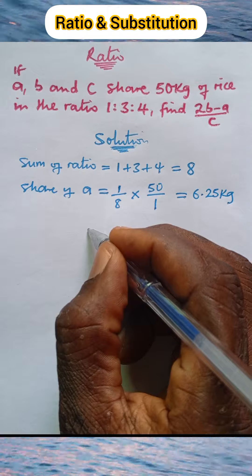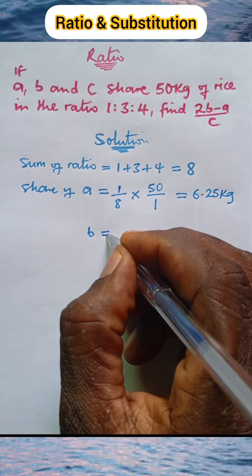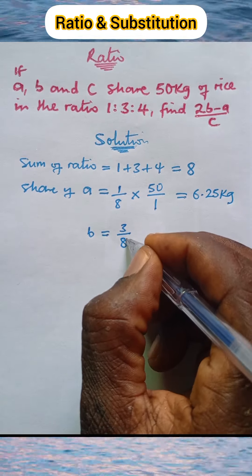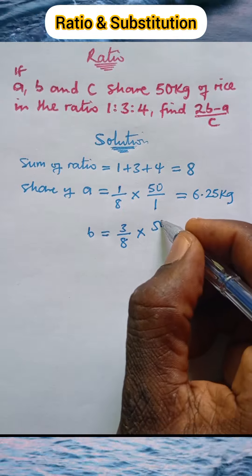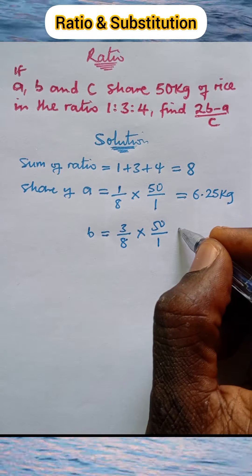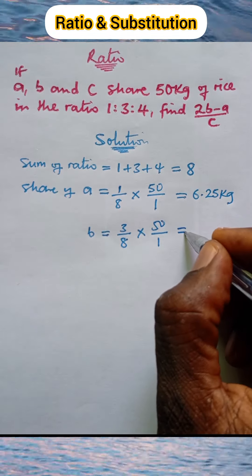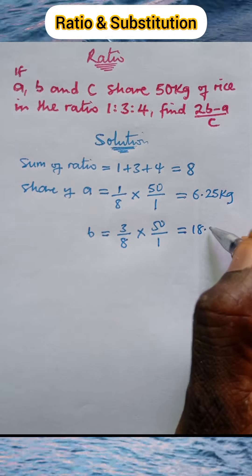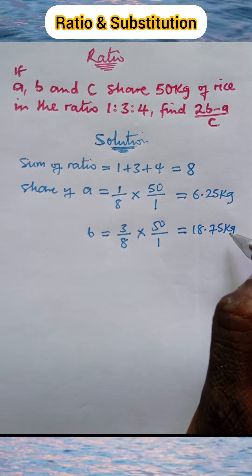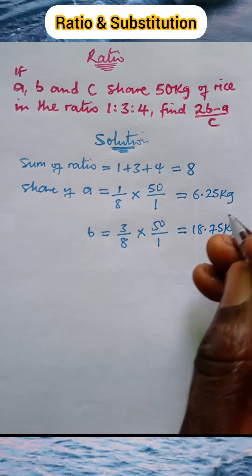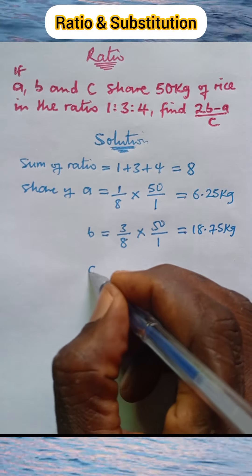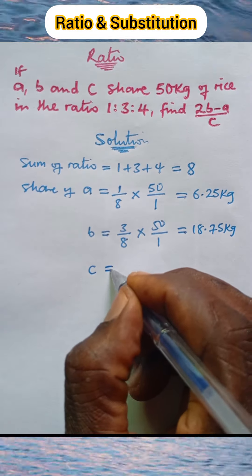Next, let's calculate the share of b. This will be the portion of b, which is 3 over the sum of ratio (8), multiplied by the amount of rice over 1. When you work this out, we get 18.75 kilograms.